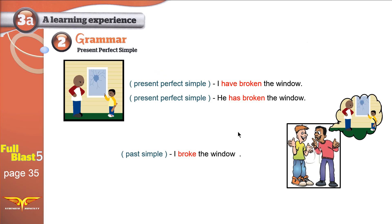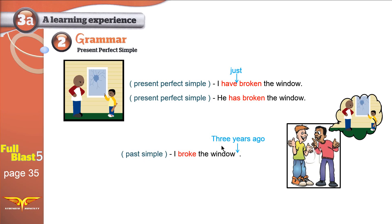Now one more thing. With Present Perfect Simple and Past Simple, we can use time expressions. For example: 'I have just broken the window.' 'Just' is not necessary in this sentence because the sentence is complete without it. However, 'just' can add a flavor and gives more meaning — it means 'not a long time ago.' And for Past Simple, we can add a time expression like 'three years ago': 'I broke the window three years ago.'